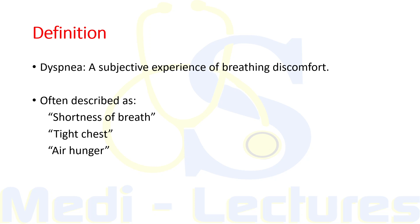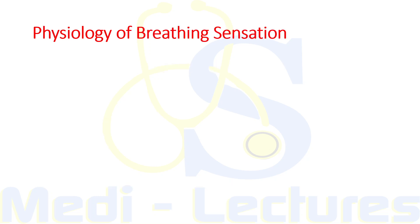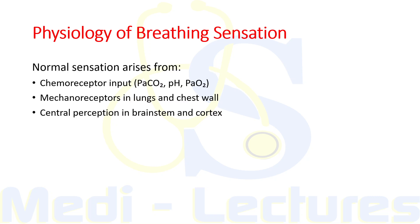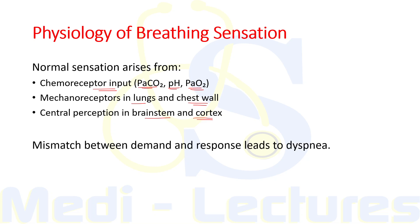Dyspnea is basically due to disproportionate effort relative to activity level. To understand its mechanism, we need to understand the physiology of breathing sensation. The brain interprets normal breathing sensation from chemoreceptor input like PaCO2 levels, blood pH, and blood PO2 levels. There are also mechanoreceptors in the lungs and chest wall which signal the brain, and finally there is central perception in the brainstem and cortex through respiratory centers. If there is any mismatch between demand and response, it will lead to dyspnea.